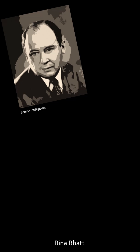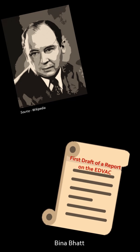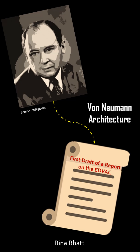Seizing this opportunity, he published a paper on EDVAC, drawing heavily from the brilliance of Eckert and Mauchly. The report, which was supposed to be a draft, carried only von Neumann's name as the author, omitting the names of other contributors. This resulted in the credit being solely attributed to von Neumann, and that's why today this architecture is known as von Neumann architecture.